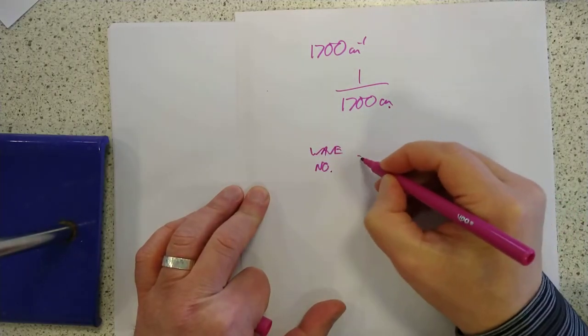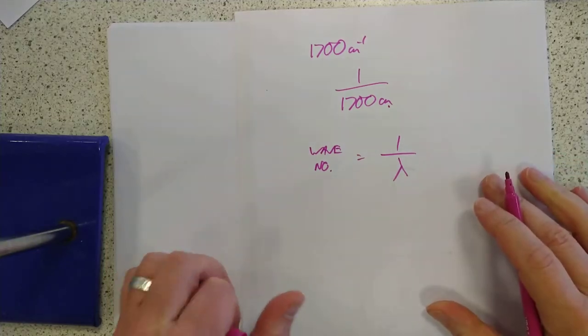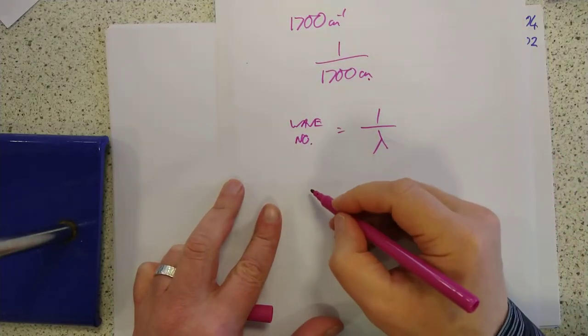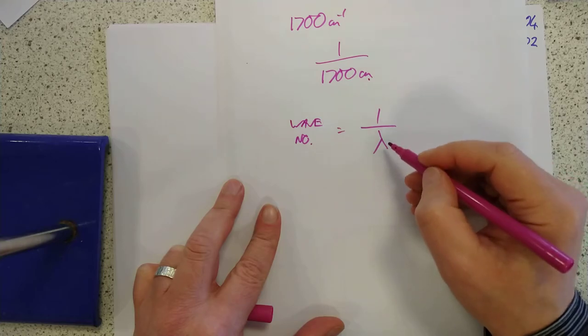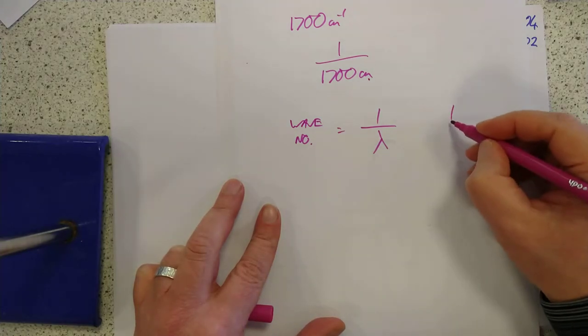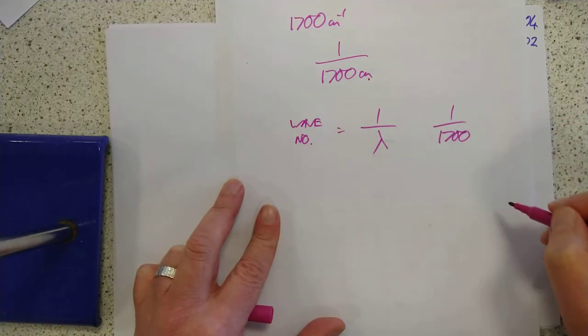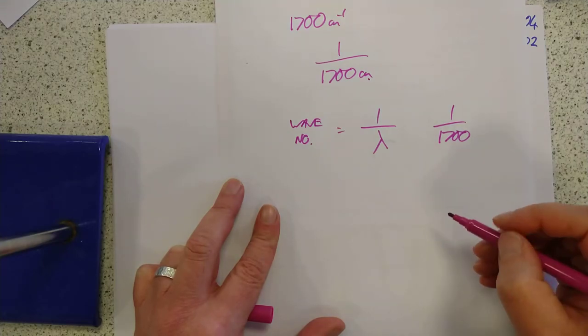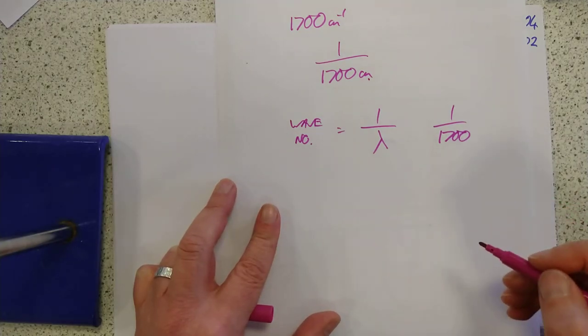Wave number equals 1 over lambda. Okay. And we've got 1,700 centimeters is 1 over lambda. So, therefore, if we do 1 over 1,700, that will give us the wavelength in centimeters. So let's do that first.